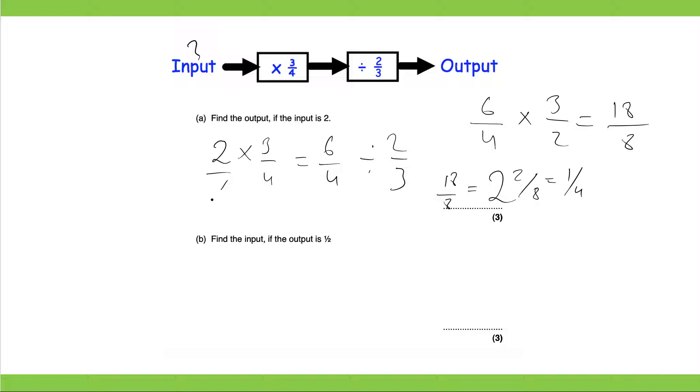Find the input if the output is a half. So if the output is a half, we need to go the opposite way. A half multiplied by two thirds, that would be two sixths or one third.